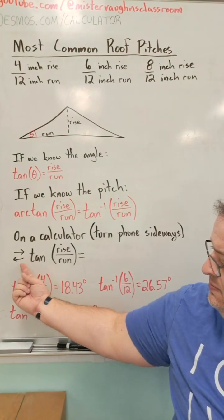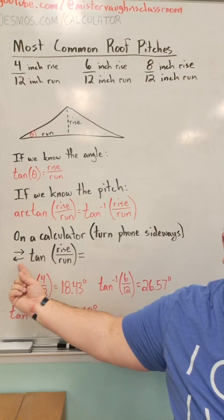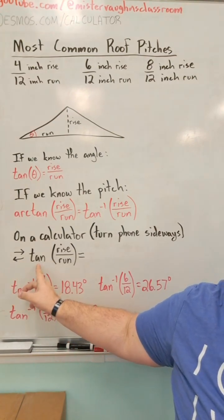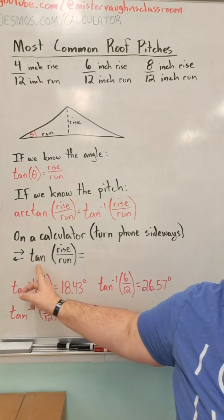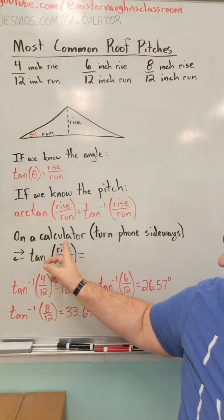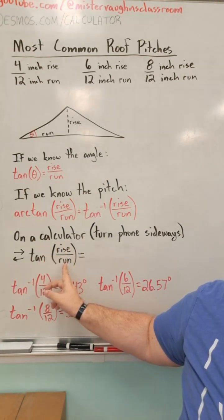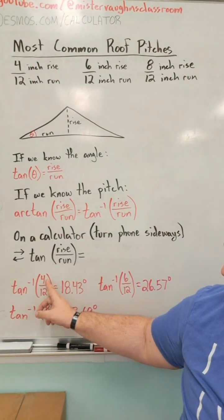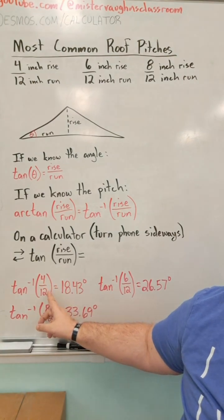Yours might have a button that says second. Mine has these buttons that look like arrows going in opposite directions. If I hit that and then hit the tangent button, it'll give me parentheses, and I can take the rise and divide it by the run. So for the examples, if I want the arc tangent of a pitch that's 4 inches over 12 inches, I find out that my angle is 18.43 degrees.